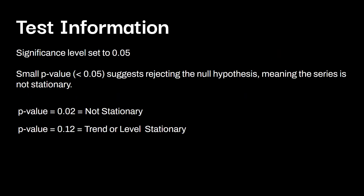For test information: typically we want to set a significance level of 0.05. A small p-value suggests rejecting the null hypothesis, which means the series is not stationary — there's some sort of unit root. If the p-value is 0.02, which is less than 0.05, we know our data is not stationary. Whereas if the p-value is 0.12, that means our data is trend or level stationary.